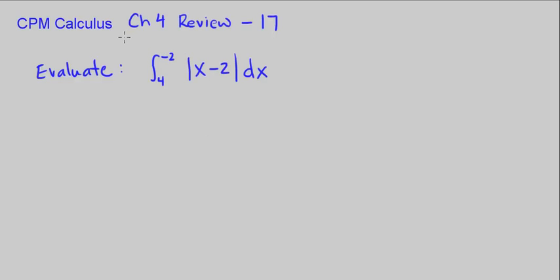This is CPM Calculus Chapter 4 Review Number 17. Here we're asked to evaluate the integral from 4 to negative 2 of the absolute value of x minus 2 dx.